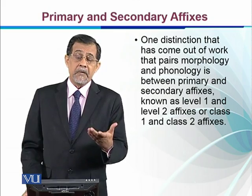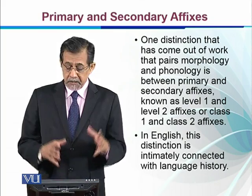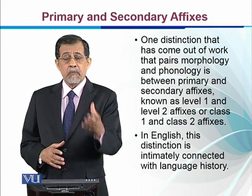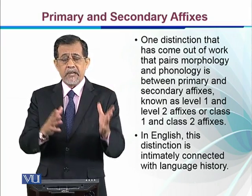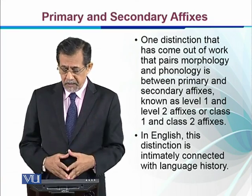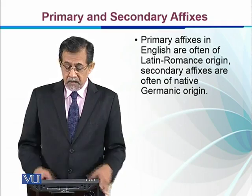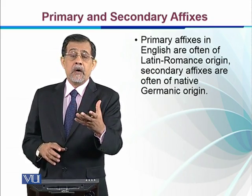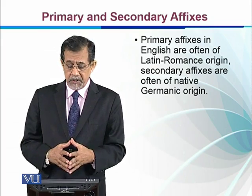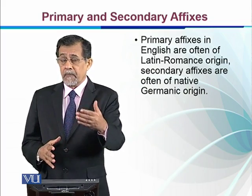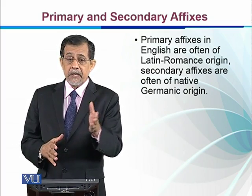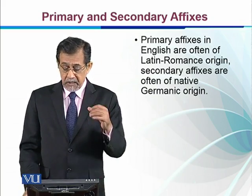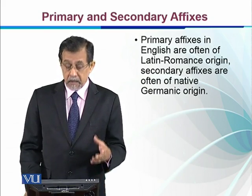So why do we call them primary and secondary affixes? In English, this distinction is intimately connected with language history — it has something to do with the etymology of the word. Etymology tells us whether a word has come from French, Greek, Latin, or another language. Primary affixes in English are often of Latin-Romance origin, while secondary affixes are of Germanic origin. If you look at the Indo-European language family, you can find the languages that fall in these two groups.